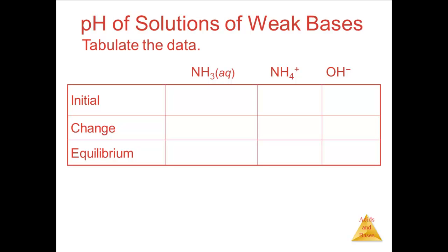Now we set up the ICE table using the initial concentration of the base, then find the equilibrium values. Note that water is left out because it is a liquid and does not appear in the equilibrium expression. Initial concentrations: NH3 = 0.15, NH4+ = 0, OH- = 0. Changes are -x, +x, +x. Equilibrium values are 0.15 - x, x, and x. If x is small compared to 0.15, it can be ignored, so we ignore it.